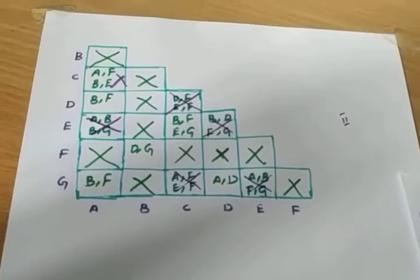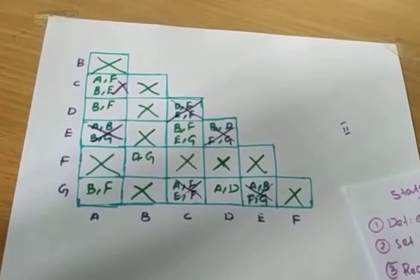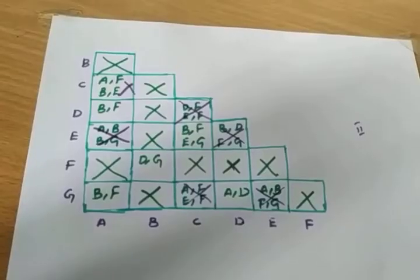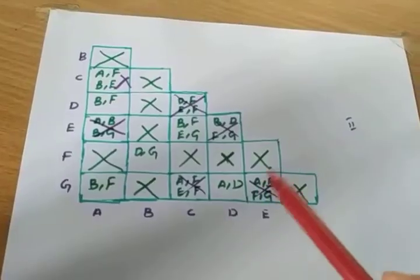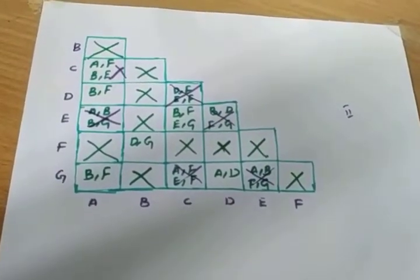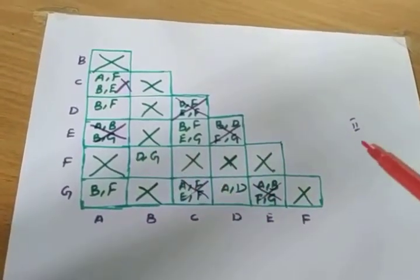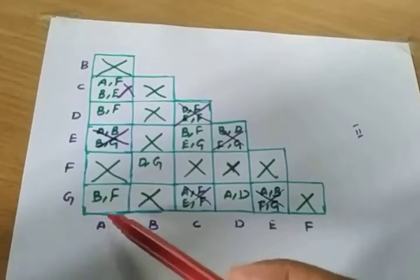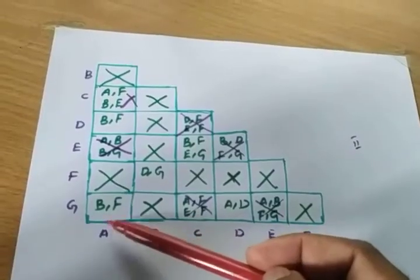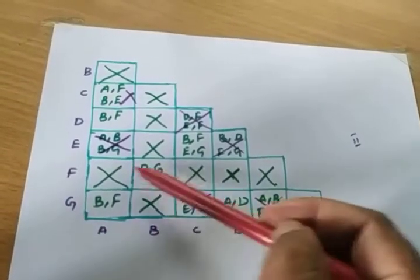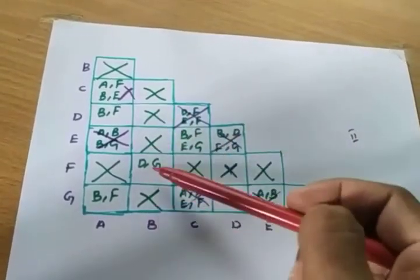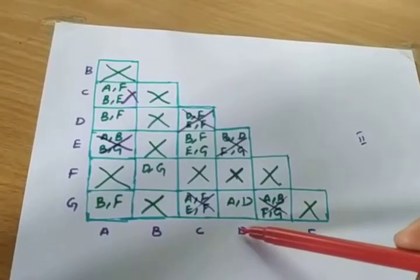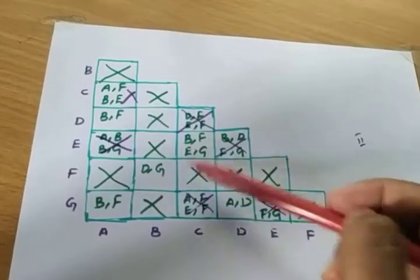Now we need to check for the third pass to get the minimum set of states. Again check for non-crossed states. Consider the AG column — it has entry BF. BF is not crossed, so no problem. Check the DG column entry — BF and DG are both not crossed, so we can take this.